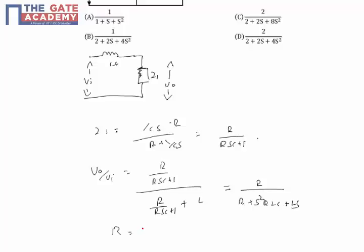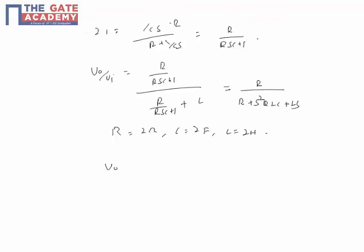We have R equal to 2 ohms, C equal to 2 farads, and L equal to 2 henry. Substituting all these values, we will get V0 of s by Vi of s is equal to 2 by 2 plus 2s plus 8s squared. So the correct option for this equation is C. Thank you.